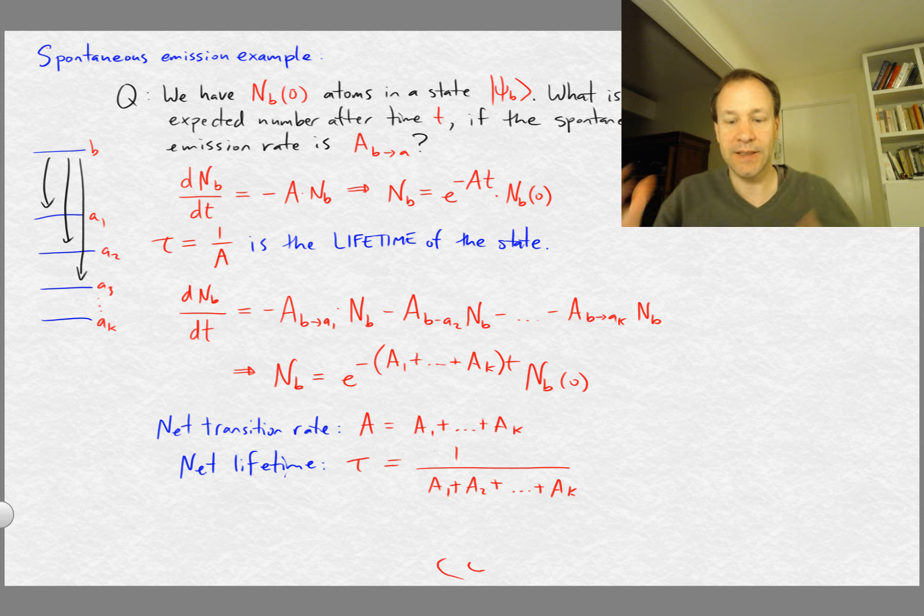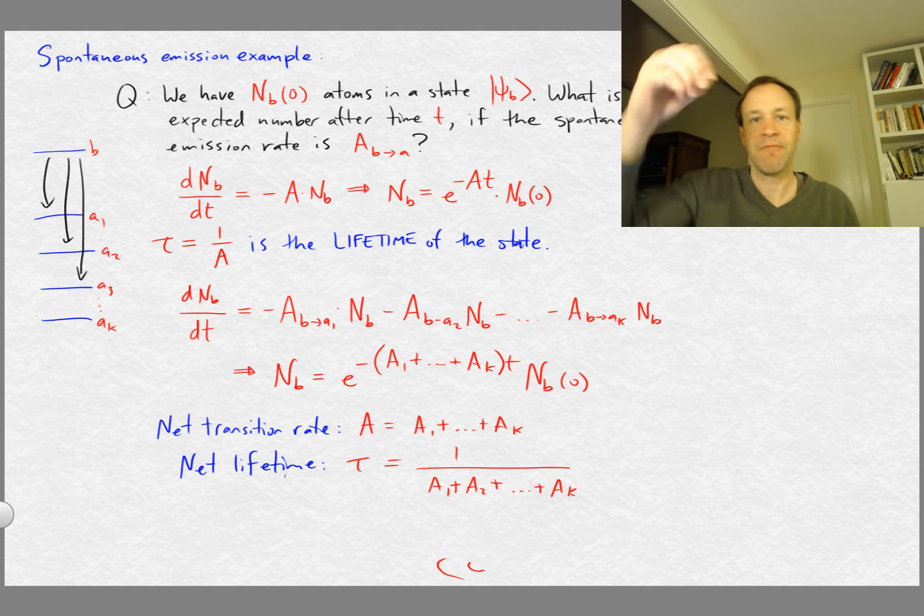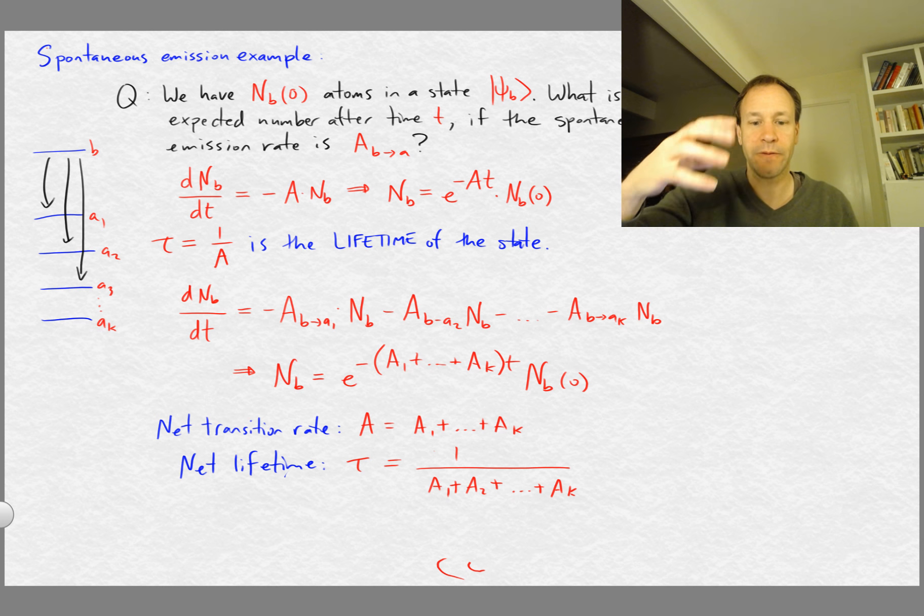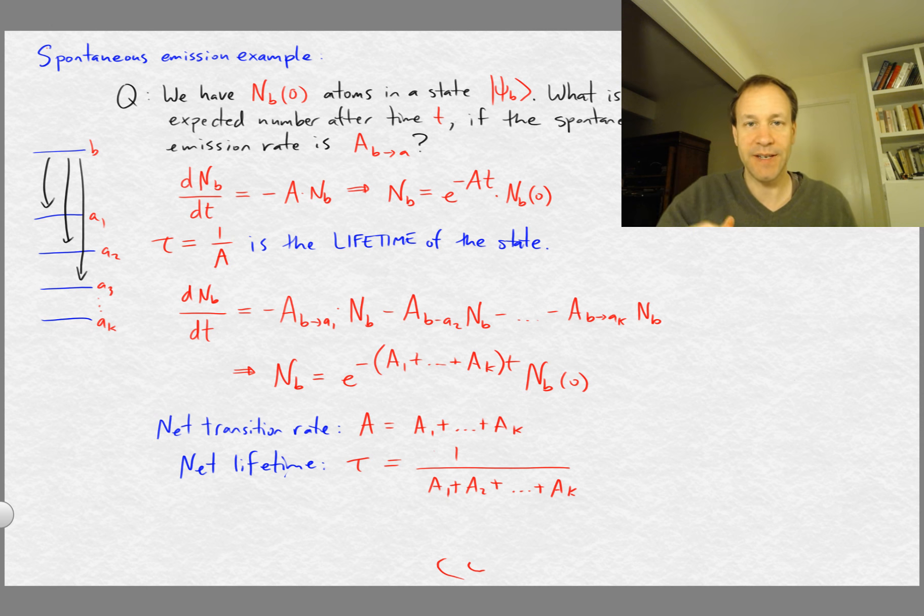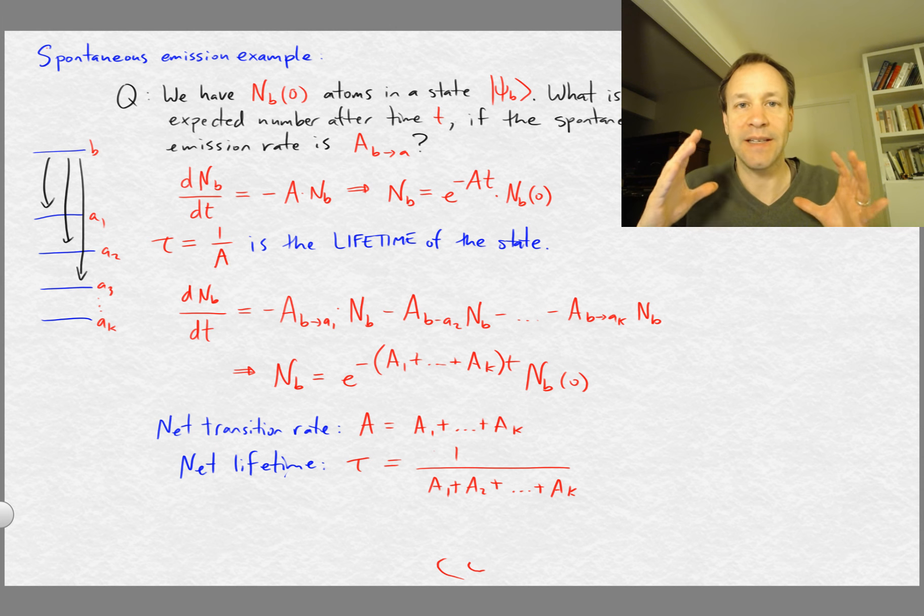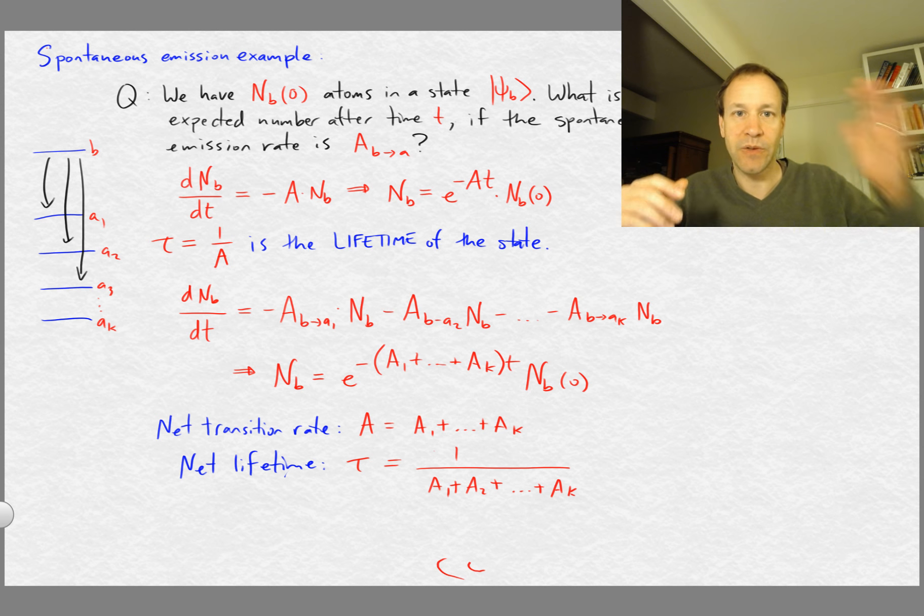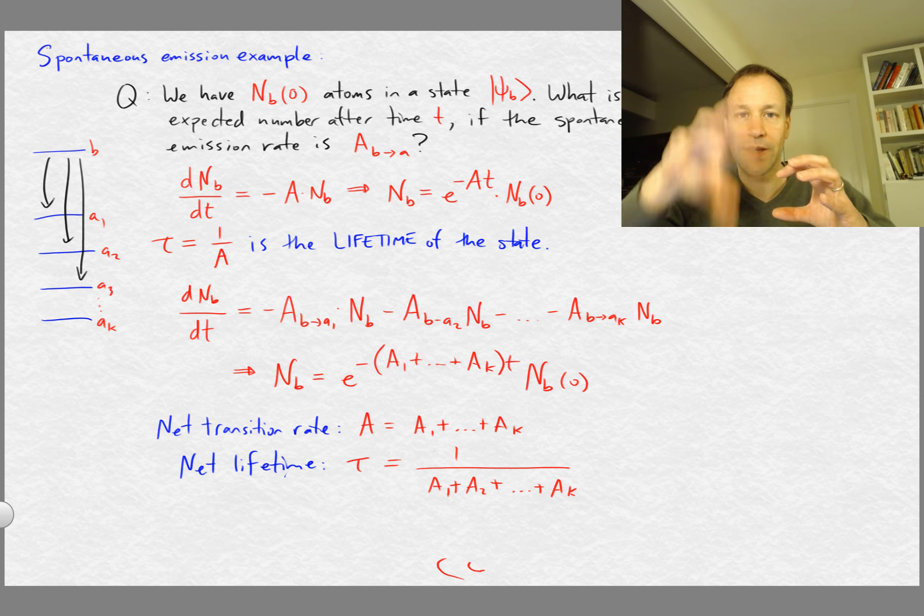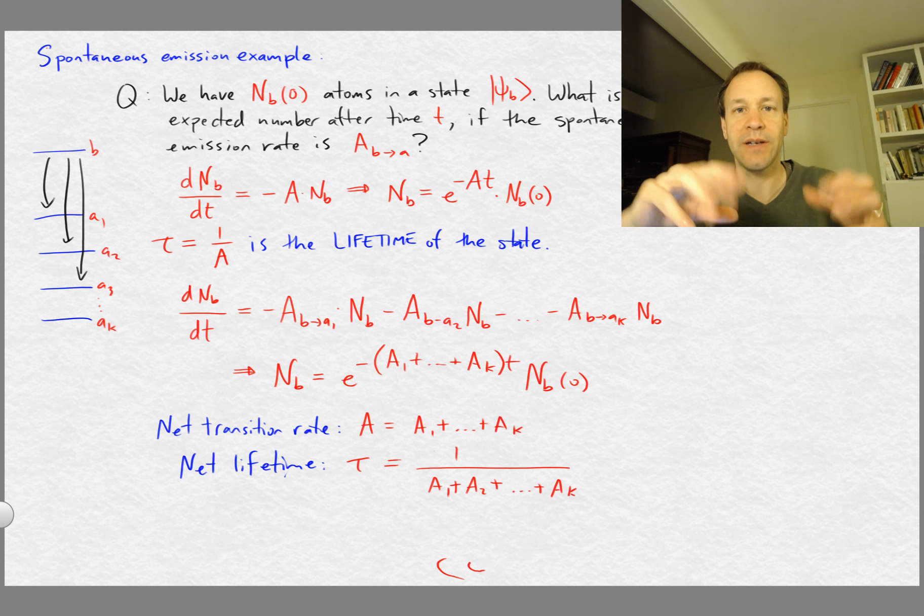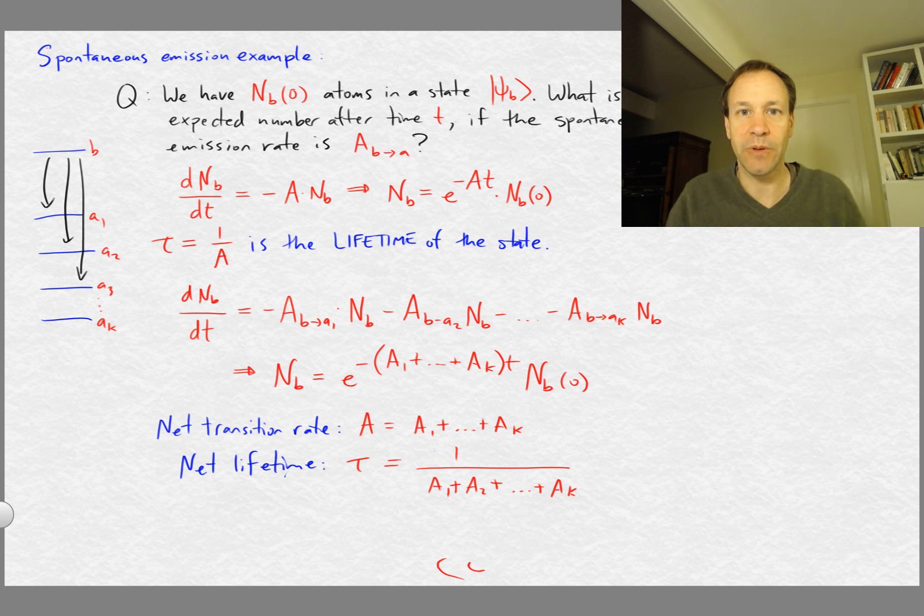And so in realistic situations, then you might typically have that type of situation where you have many different possible lower energy states that you could make a transition to. And so what you need to do is do some separate calculation for each of those transition rates. That involves calculating matrix elements between your b state and your whatever final state with the electric dipole moment operator if we're working at this dipole approximation.